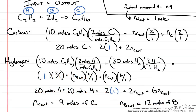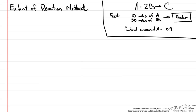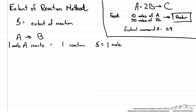Let's look at the last method: the extent of reaction method. This method writes expressions for species flow rates in terms of an extent of reaction and substitutes this with a known feed or product flow rate to determine remaining unknowns. The extent of reaction is written as the symbol psi. I think of it as how many reactions take place on a mole basis. For example, if A goes to B and 1 mole of A reacts, then the extent of reaction is 1 mole — or moles per time for a continuous process.